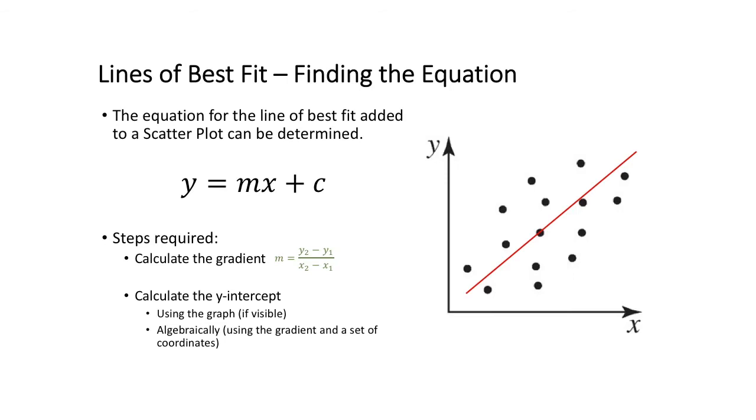Because the line of best fit that we add into our scatterplots are a linear line, we can use the linear line form of y equals mx plus c to be able to determine what that linear line's equation is going to be.